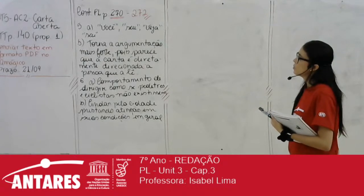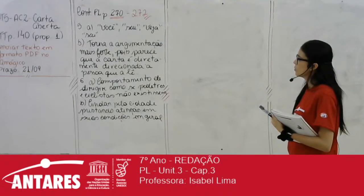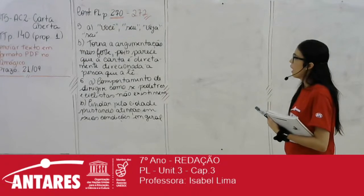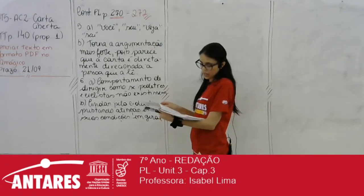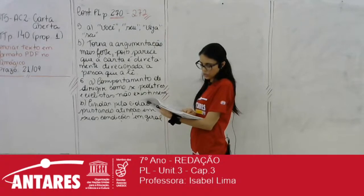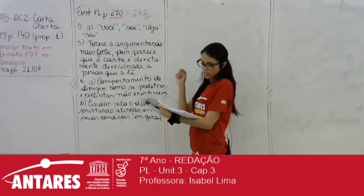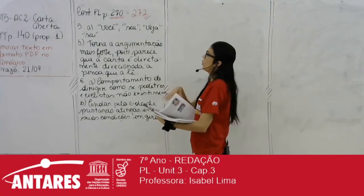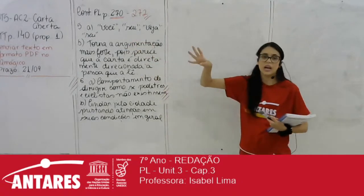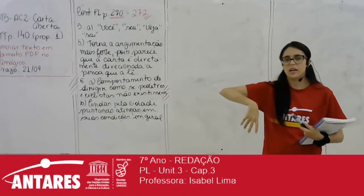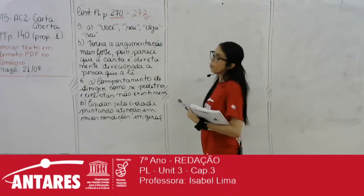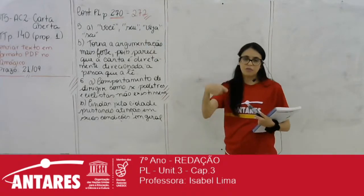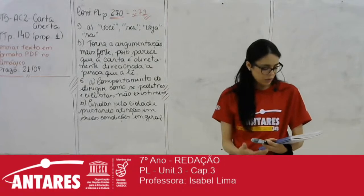Por que na letra A da quinta questão tem dois 'seu'? Porque ela usa duas vezes, em duas frases diferentes: 'deixa o seu carro' e 'seu bairro'. Coloquei duas vezes só porque são de frases diferentes. Se você quiser colocar só uma, não tem problema.